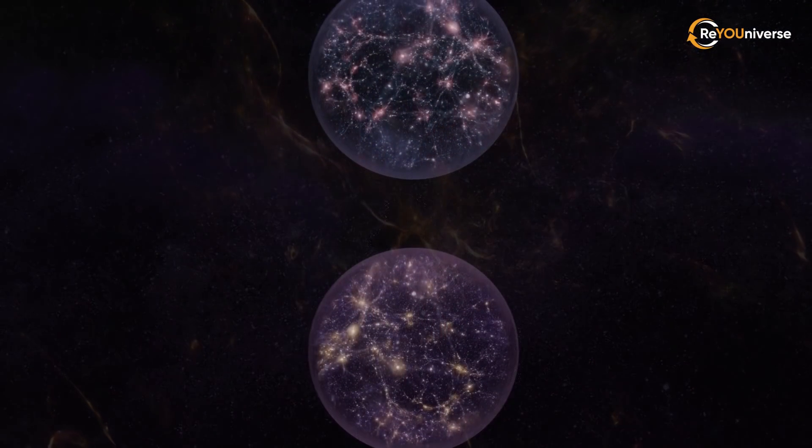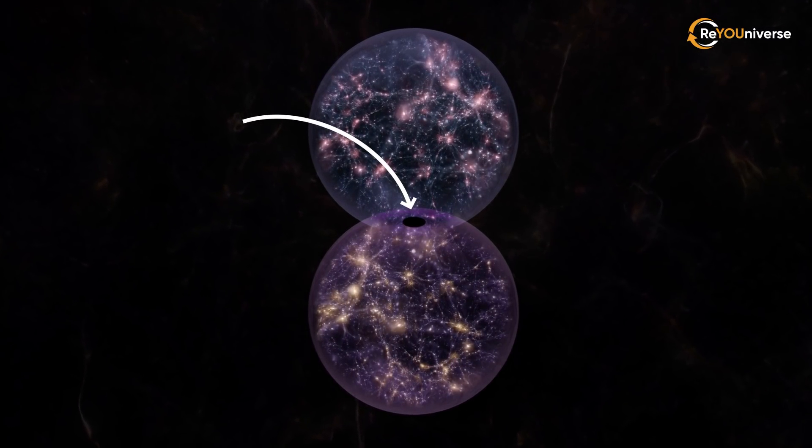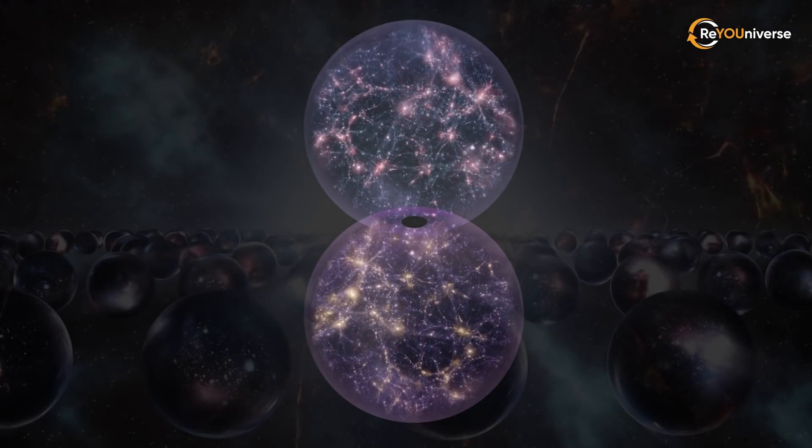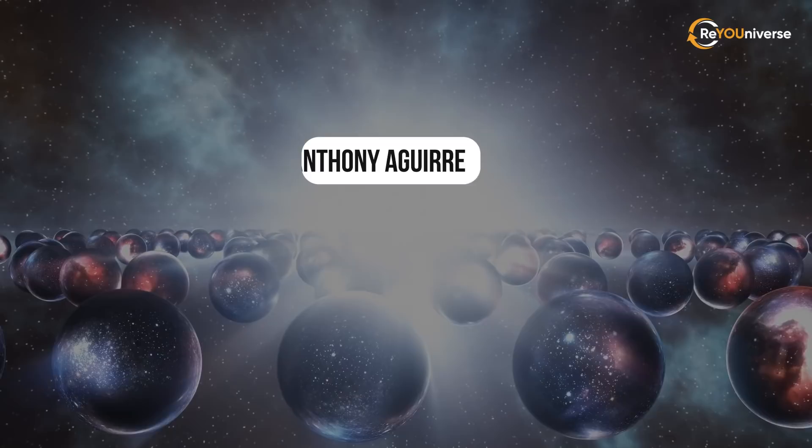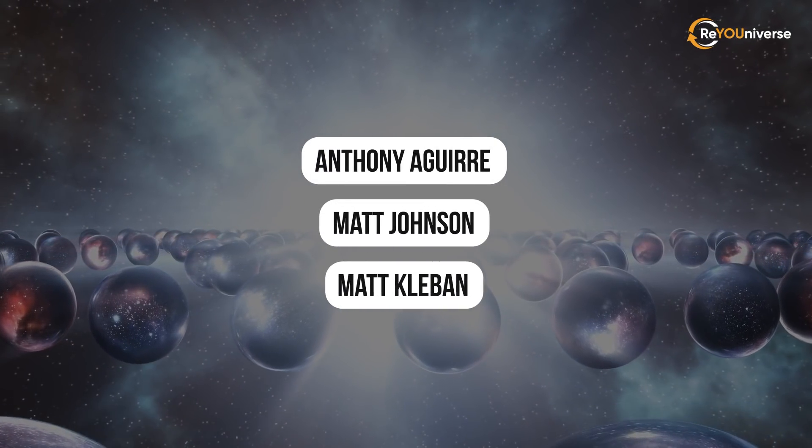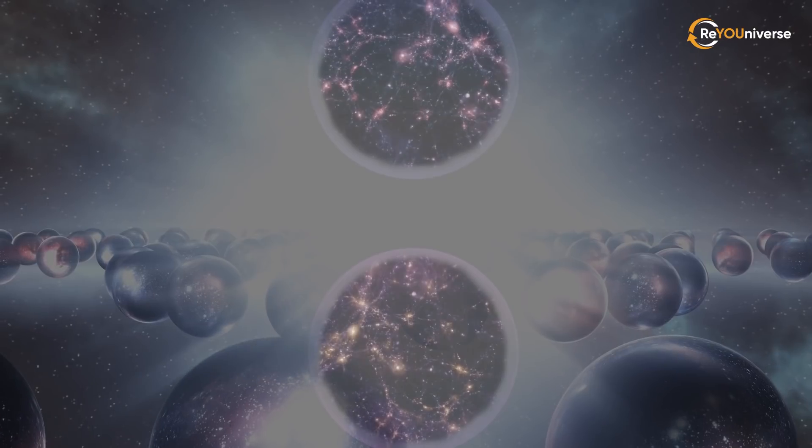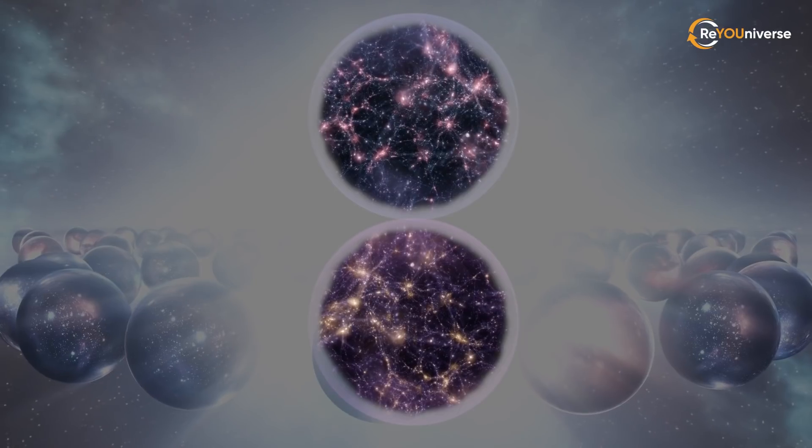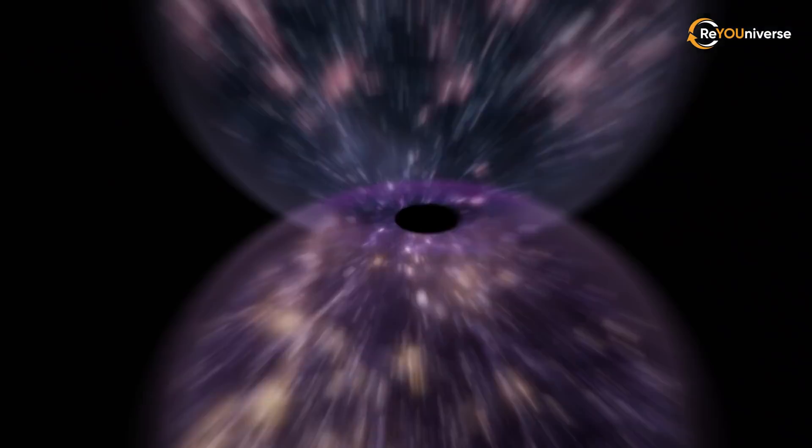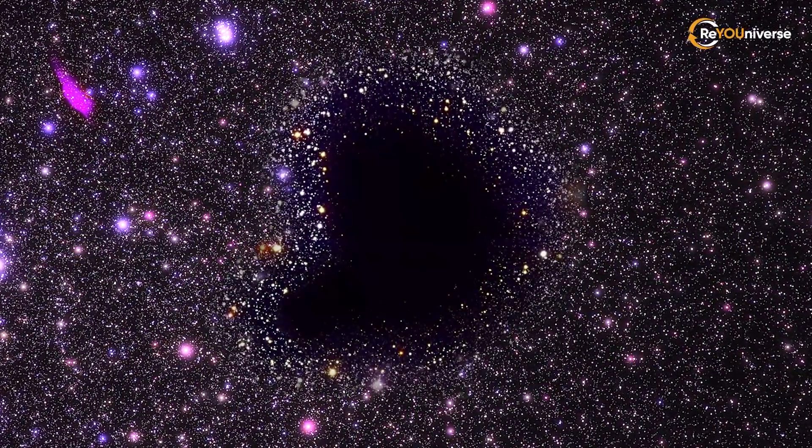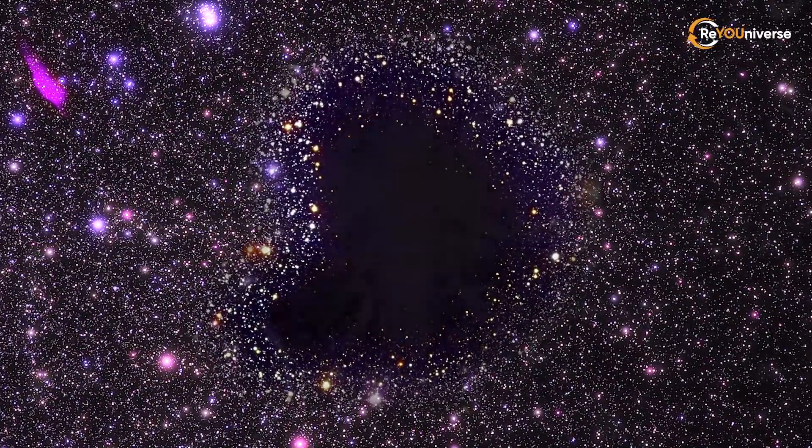They argue that this is not even a void, but a place where our universe collided with another bubble universe. This statement is supported by other physicists, namely Anthony Aguirre, Matt Johnson, and Matt Kleban. Their works proved that a collision between our bubble universe and another bubble in the multiverse would leave an imprint on the cosmic background radiation that would resemble a circular spot with either more or less intense radiation. This is actually what we observe.